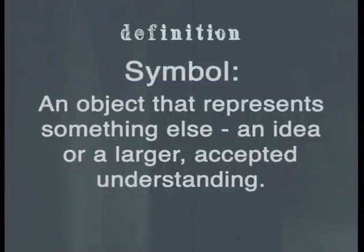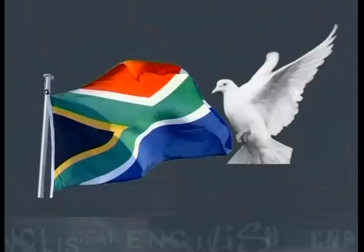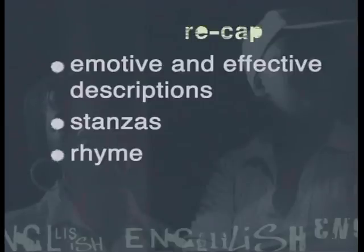Now let's move on to another characteristic that is frequently used in poetry — the symbol. A symbol is an object that represents something else: an idea or a larger accepted understanding. Think about things like the South African flag or a white dove. The South African flag represents our country, but it also represents democracy, the end of apartheid, and freedom. The white dove represents peace, as we all know. Now let's look at what we have added to our list of characteristics of poetic writing: emotive and effective descriptions, stanzas, rhyme, rhythm, figurative language, imagery, and symbols.